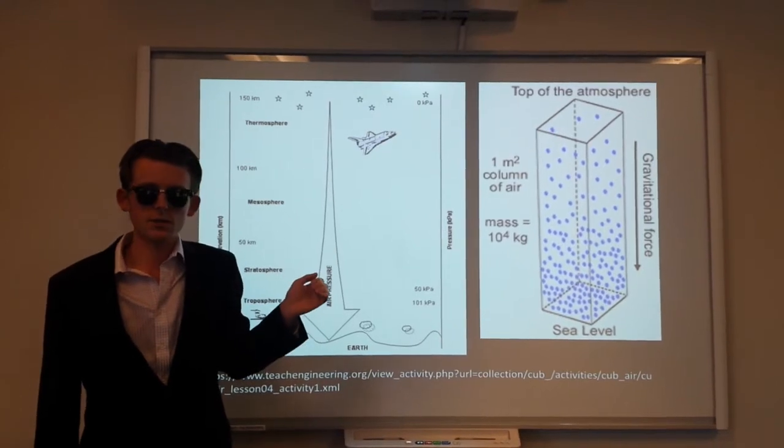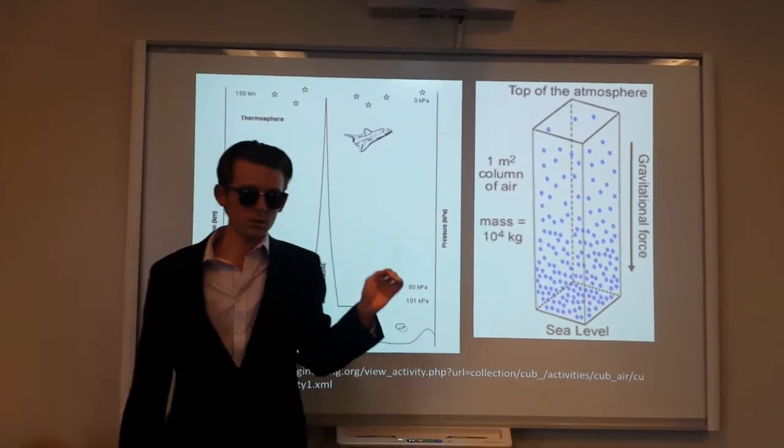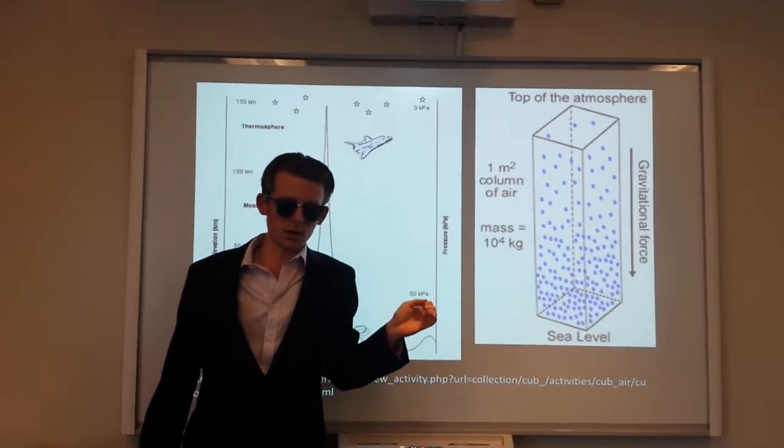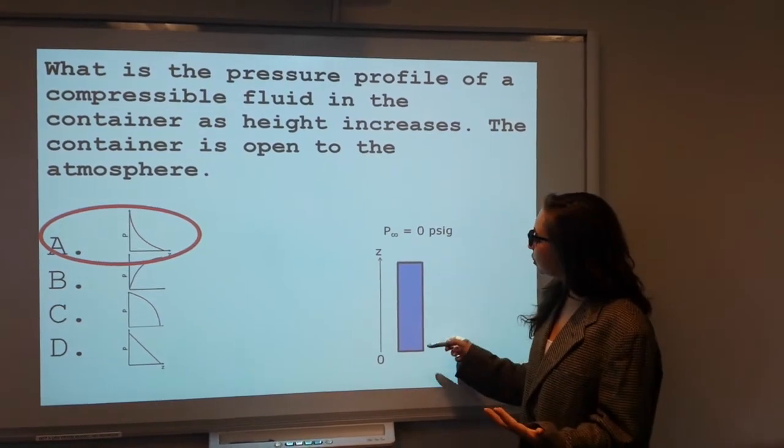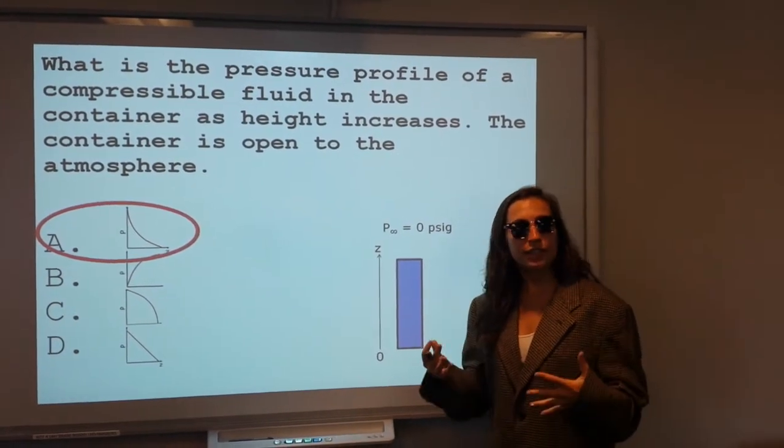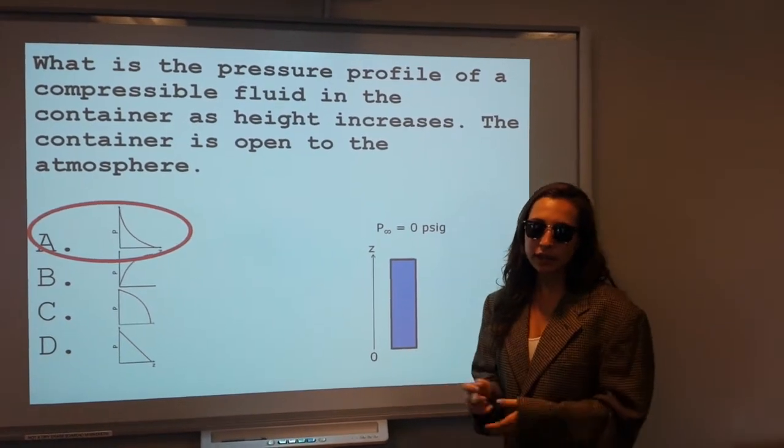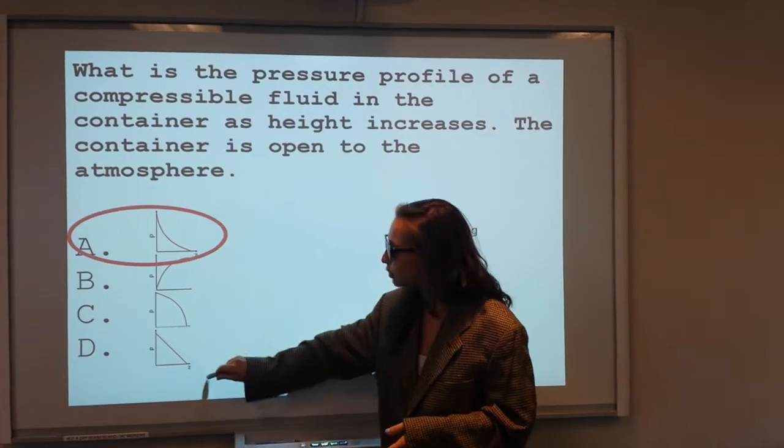We now go back to Taylor, who has a conceptual problem to help us visualize what a compressible fluid pressure profile would look like. So if we look at this column as the eye of the hurricane, what would the pressure change look like as we increase in height? Once again, it is a compressible fluid, so we cannot have a linear relationship as shown in D. So that eliminates choice D for us.